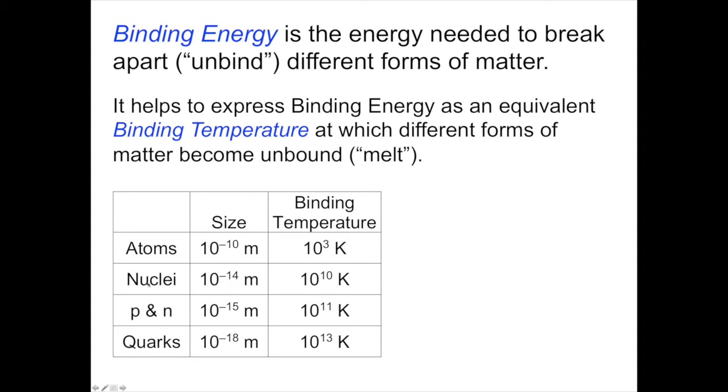Atomic nuclei consist of protons and neutrons. They have size scales four orders of magnitude smaller than atoms, at 10^-14 meters. The binding temperature of an atomic nucleus is 10^10 degrees Kelvin, 10 billion degrees Kelvin.